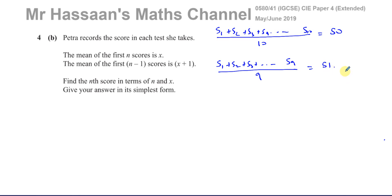So if you wanted to work out what the 10th score is, what we could do is find the sum of the first 9 scores. The sum of the first 9 scores is going to be 9 times 51 — the number of scores times the mean. And that will give us the sum of the first 9 scores.